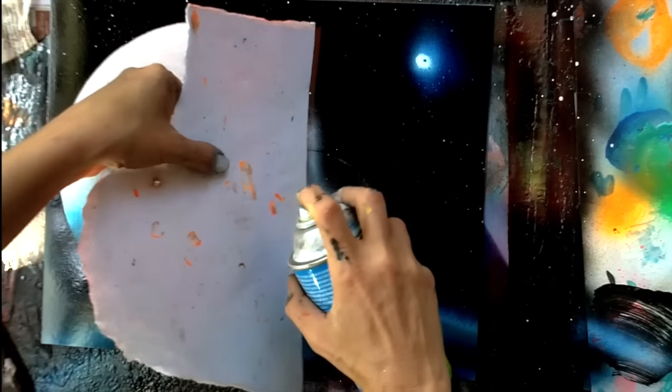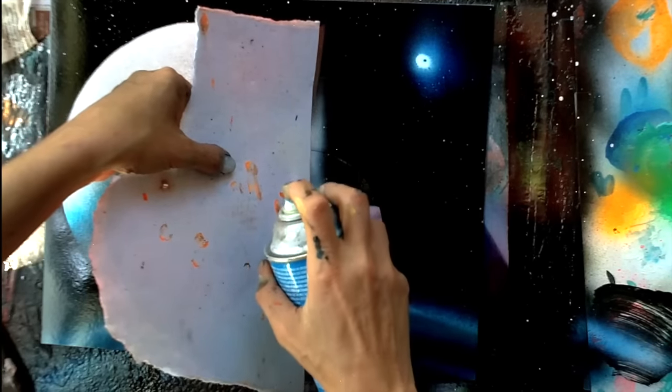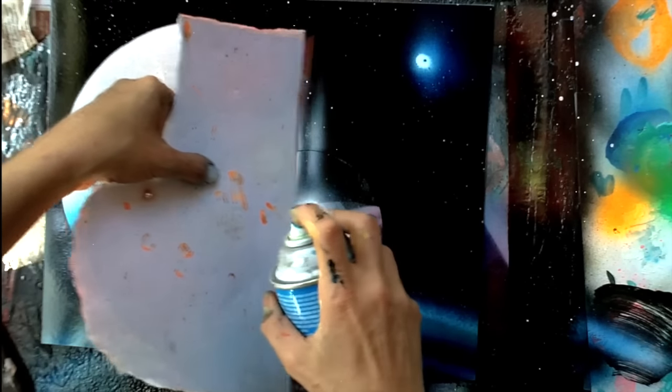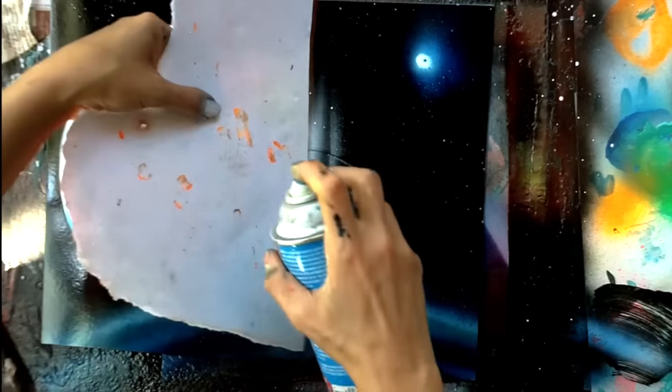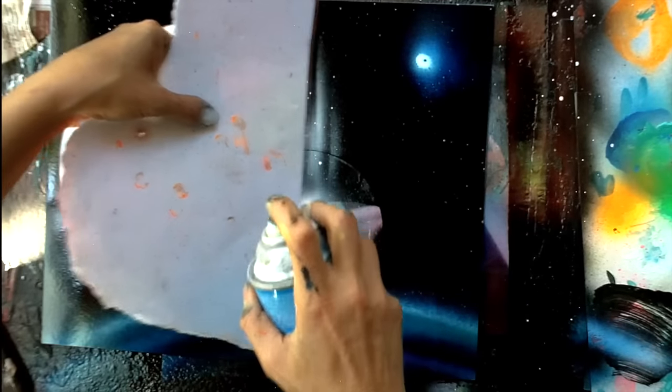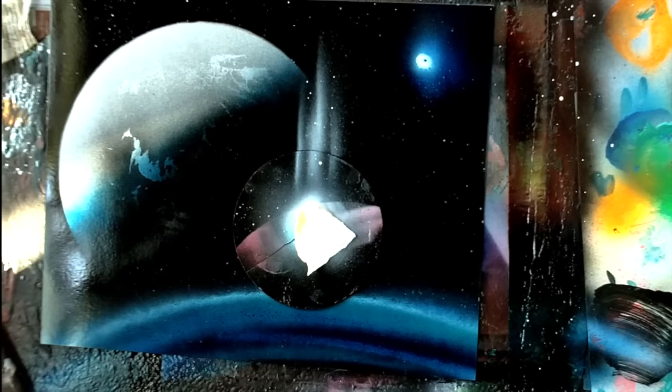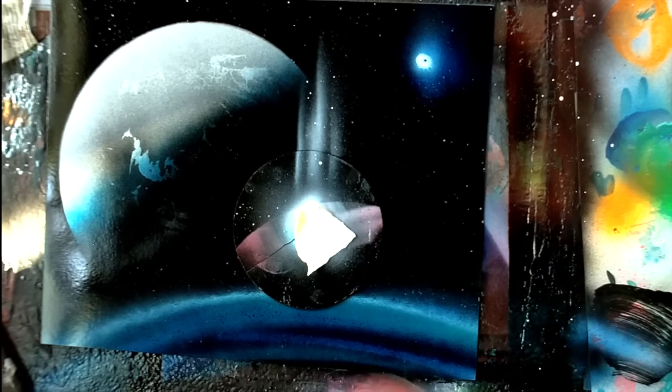You do that by bouncing a nice soft white paint like Color Place or Molotov off of a piece of poster board. I'm not spraying directly onto my painting, I'm spraying onto the poster board and it's bouncing off, and I've got those three lines on top of my planet and the one in the middle is nice and long.